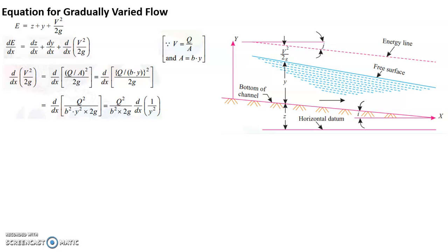So D by DX of V square by 2g gets some more meanings like D by DX of, V can be substituted with Q by A. Q by A square by 2g. And A is B into Y. So that is one Y term, so it becomes square, Y square. So ultimately D by DX of V square by 2g can be written in terms of Q square by B square into 2g, the constant values, into D by DX of 1 by Y square.